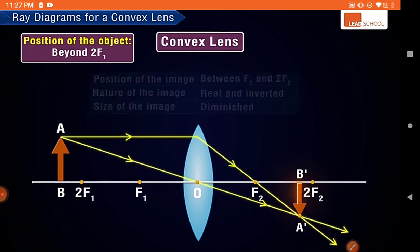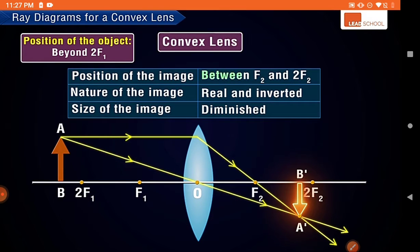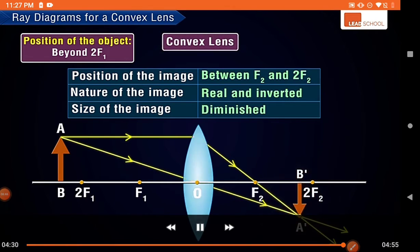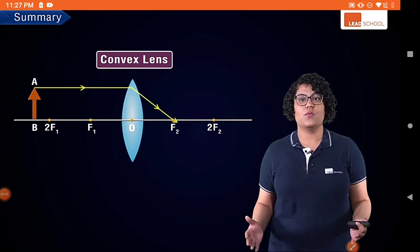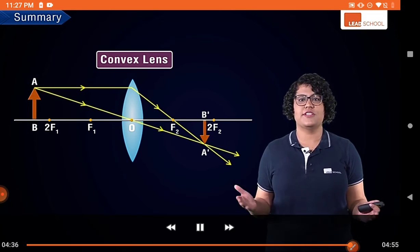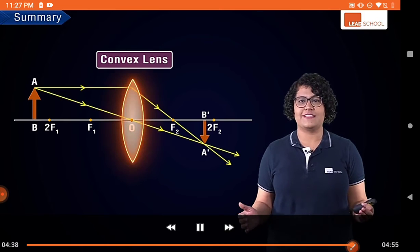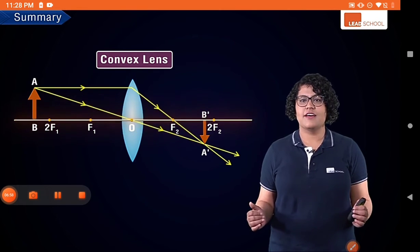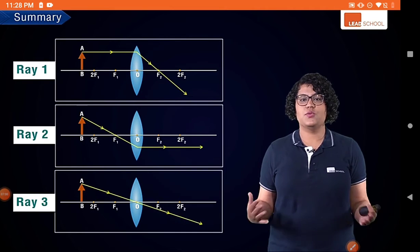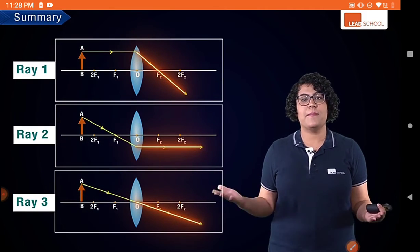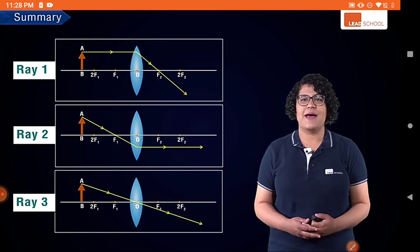The image is formed between F2 and 2F2 and it is real, inverted, and diminished. This is how we draw ray diagrams for an object placed in different positions in front of a convex lens with its base on the principal axis — by choosing any two incident rays and tracing their path.